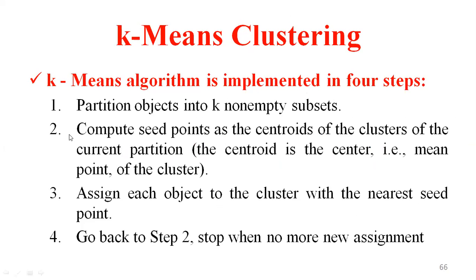The k-means algorithm is implemented in four steps. First, partition the objects into k non-empty subsets. For example, the German dataset consists of 1,000 objects. Those 1,000 objects are divided into k groups — for example, k equal to two, or k equal to three. The Elbow method is one approach for identifying the k-value. Second, compute the seed point as the centroid of the cluster of the current partition.